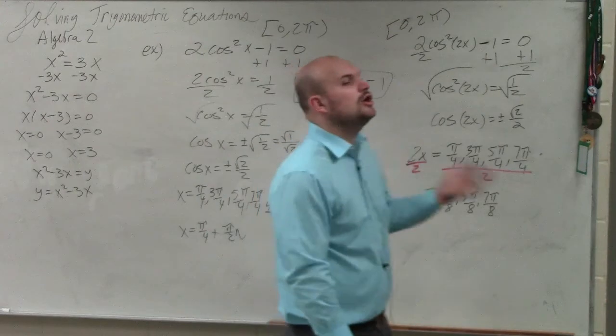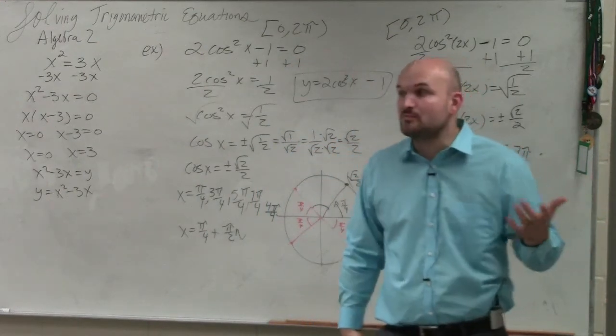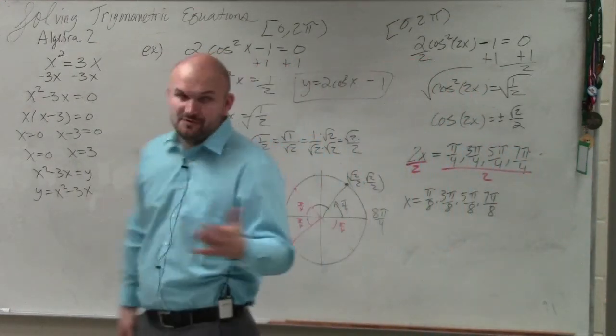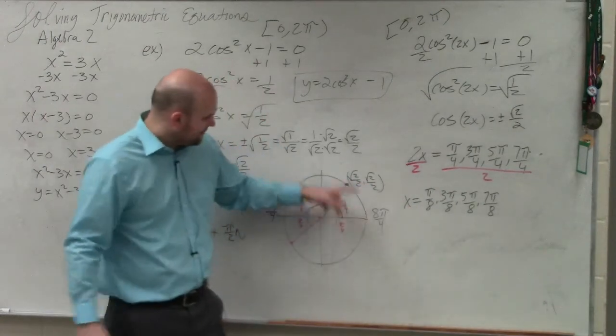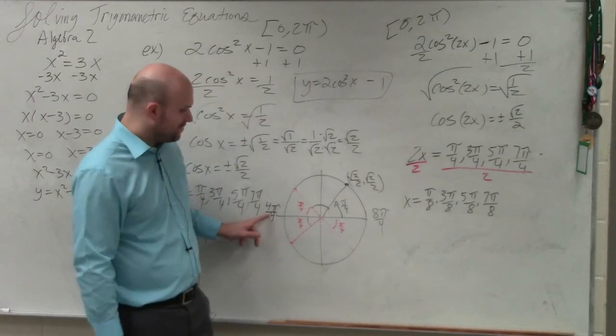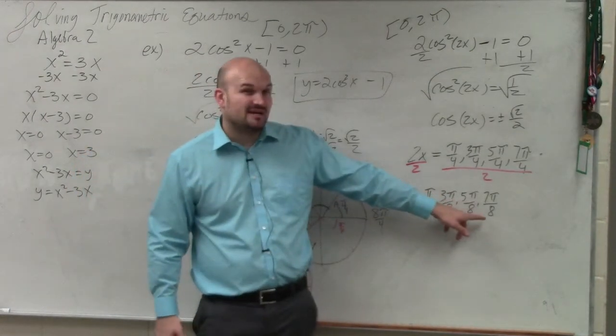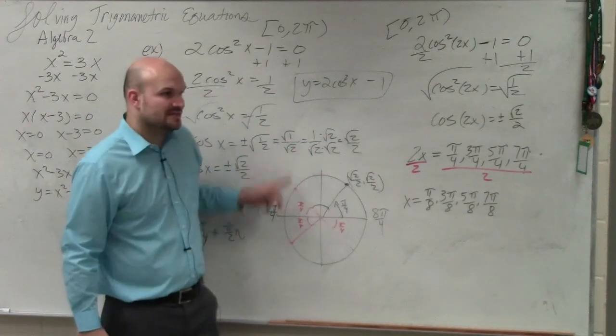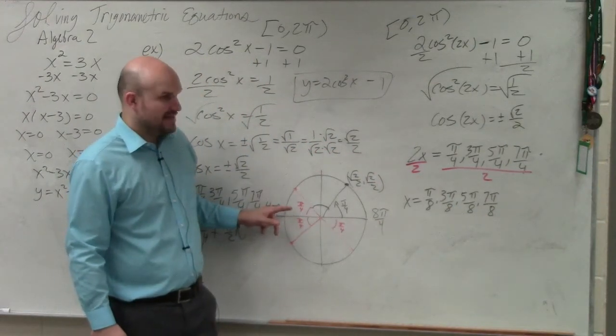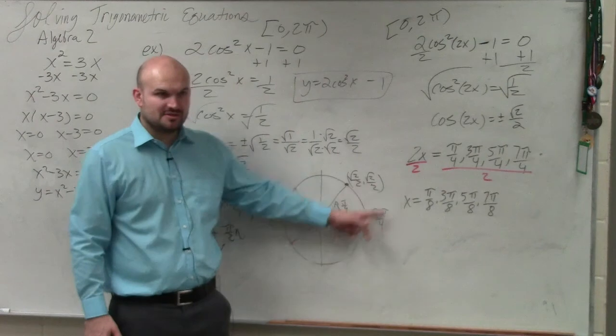However, it says find all of the solutions. I don't know if there's more solutions. But if you guys think about this, halfway around a circle is pi, or 4 pi over 4. So if I'm breaking it up into 8's, halfway around a circle is 8 pi over 8. So that means I might still have some solutions in this bottom half.